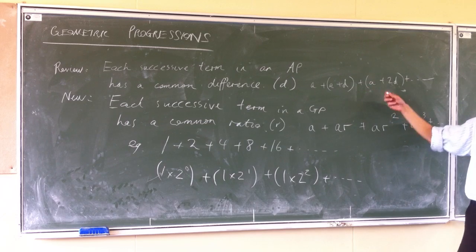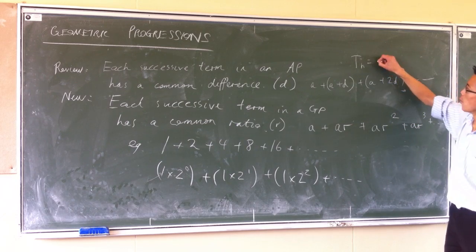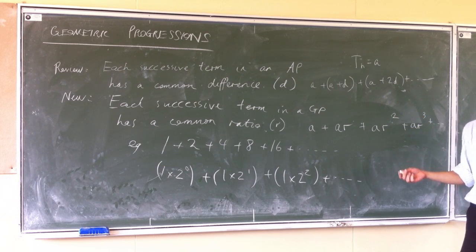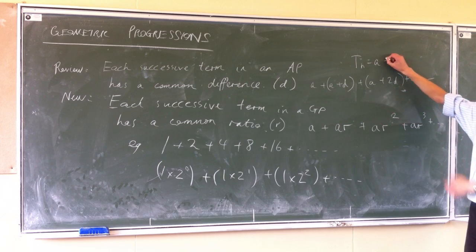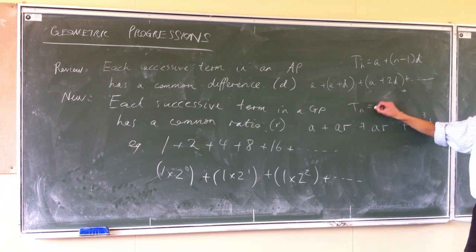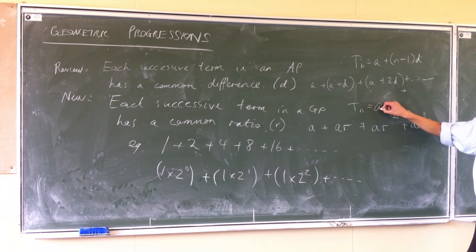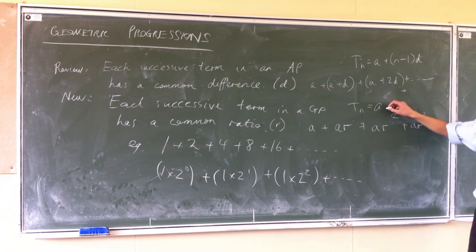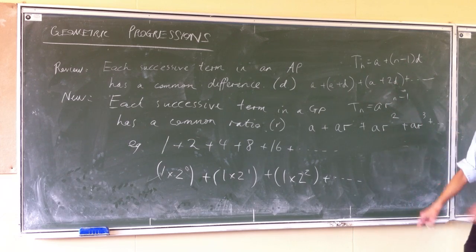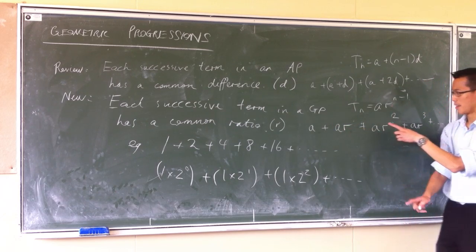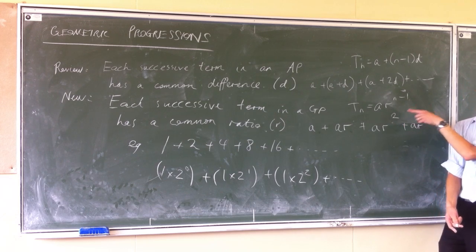Reviewing: the nth term of an AP was the first term plus how many lots of the common difference — n minus 1 lots. In the same way for a GP, the nth term will be the first term times how many lots of the common ratio, which is also n minus 1 lots. You can see the first term has zero lots of R, the second term has one lot, the third term has two lots — that's where the n minus 1 appears.